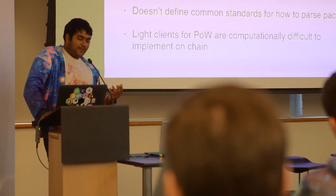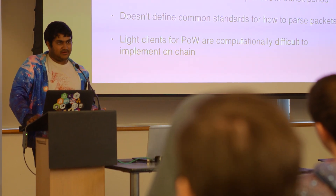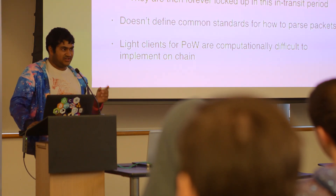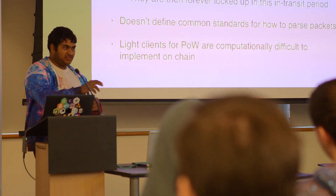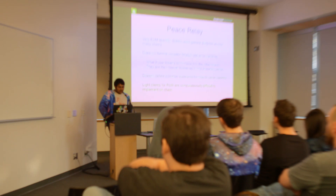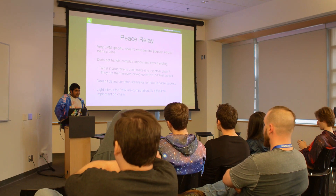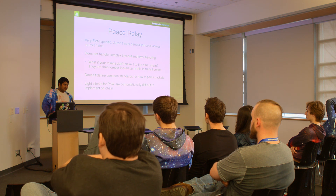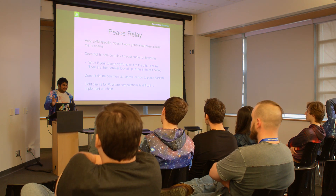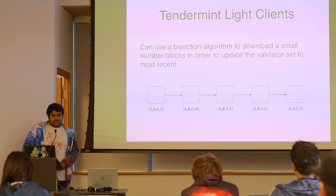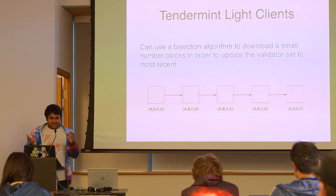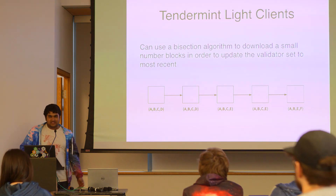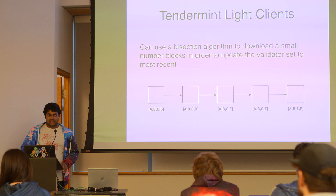Peg relay also didn't define common standards for how to parse packets — it was very specifically designed for one use case, with Ethereum and Ethereum Classic addresses hard-coded in. And finally, clients for proof-of-work are very computationally difficult to implement on-chain. In the hackathon project we kind of just assumed the header was correct. The benefit of Tendermint-style clients is that they make on-chain verification very easy — verifying a Tendermint header is roughly as complicated as verifying a multi-sig, about the same computational overhead.